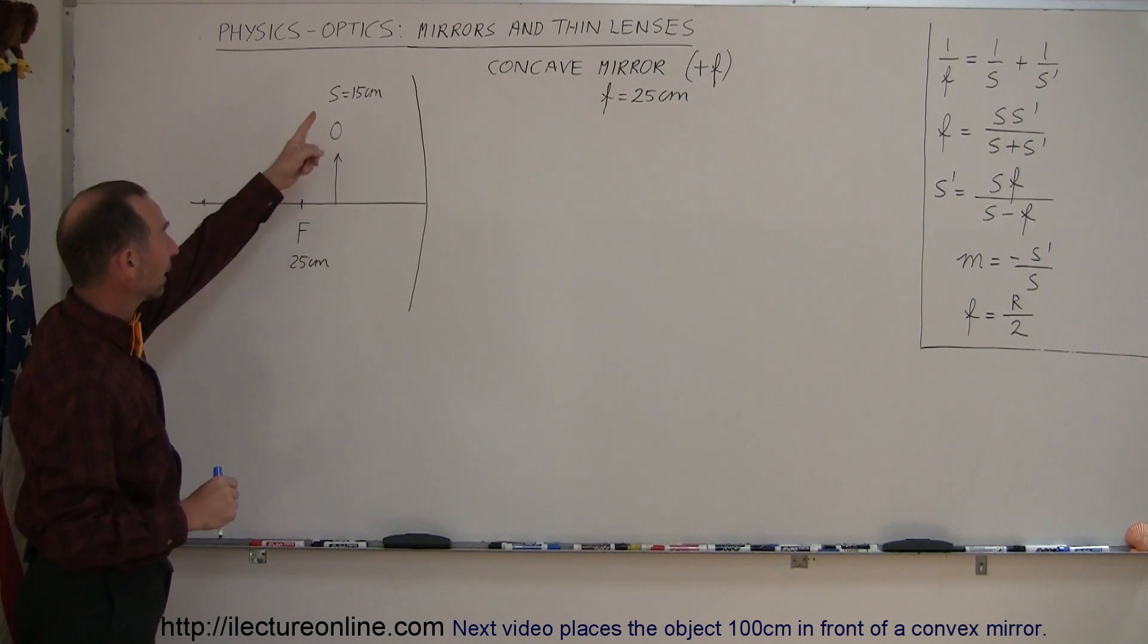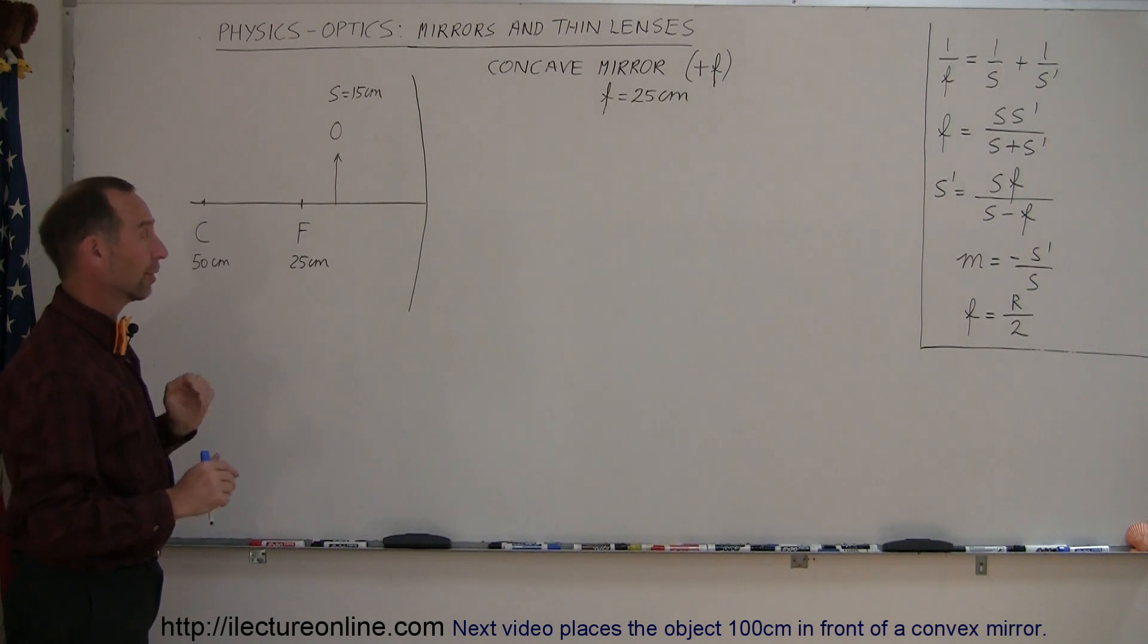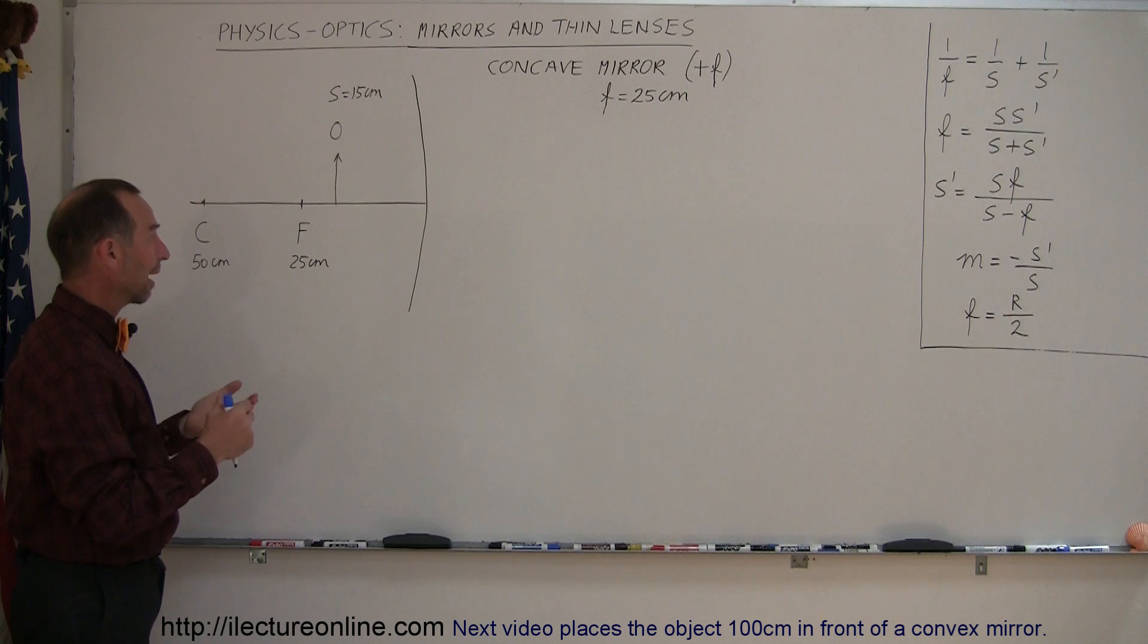There's our object placed 15 centimeters away from the mirror, which means it's closer to the mirror than the focal point. So here things are a little bit different. Again, we're going to find the image using a graphical method.